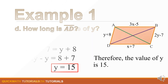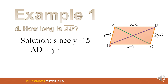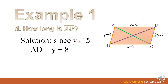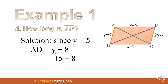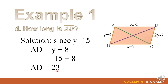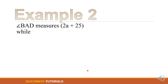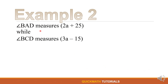For letter (d), how long is line segment AD? In the figure, AD = y + 8. Since y = 15, we substitute: 15 + 8 = 23. Therefore, line segment AD is 23 centimeters.